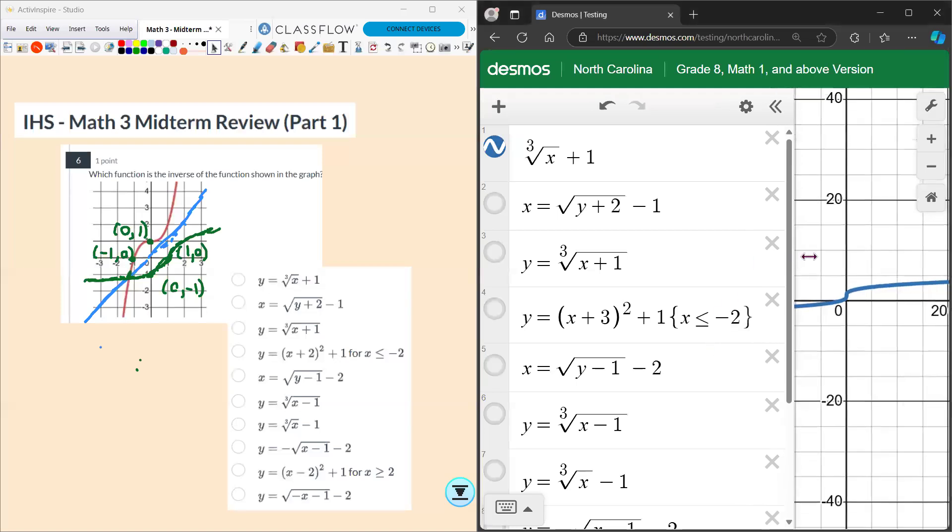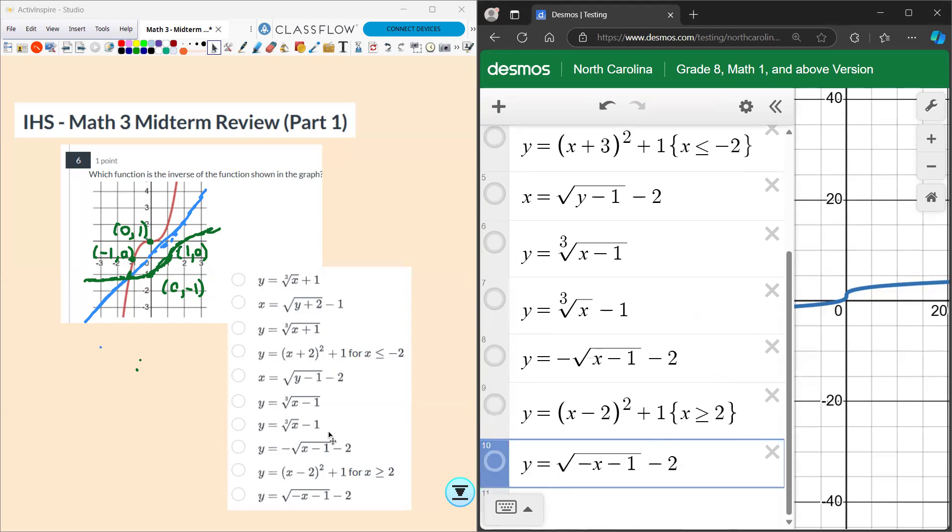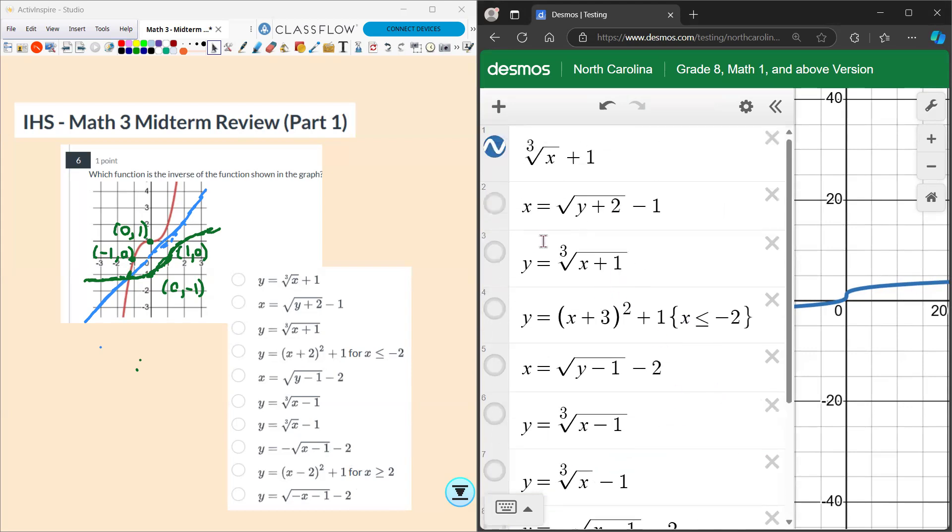Taking the time to key them all in. Just a quick note, when you see the for x is less than or equal to -2, you'll want to put those in squiggly brackets. The same thing with the for x is greater than or equal to 2. So let's see if we can find the graph that works.